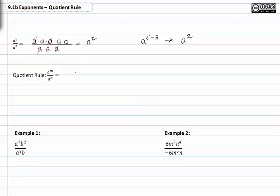So if we look at the quotient rule, the quotient rule states that if you have a to the m divided by a to the n, then you get a to the m minus n.